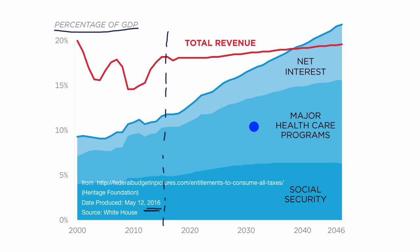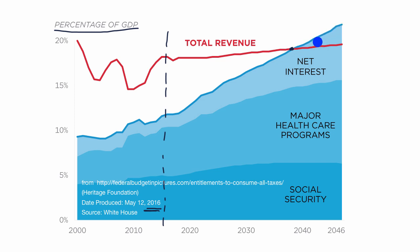Assuming the data in this visual — sourced from the White House in 2016 — the mandatory outlays from entitlement programs and net interest, which is also essentially mandatory, are going to take up all of the revenue that the federal government collects. So if the federal government wants to do anything above and beyond those things — discretionary spending like the military — it would have to run a deficit or increase total revenue. And going into the 2040s and 2050s, it gets worse and worse. Something has got to give.